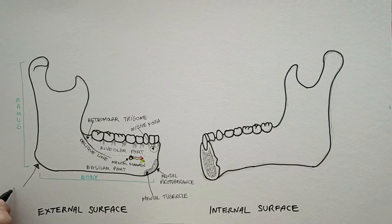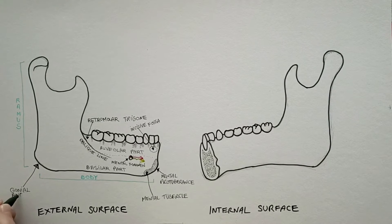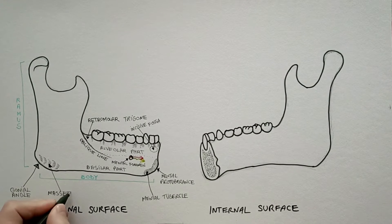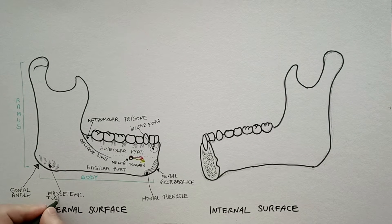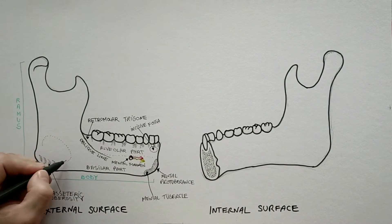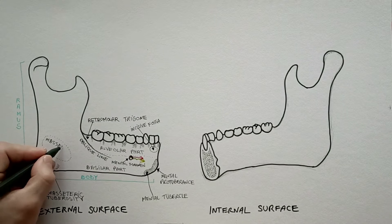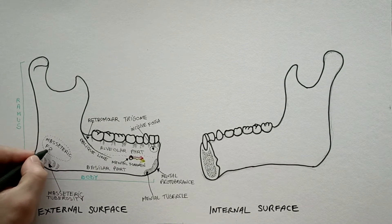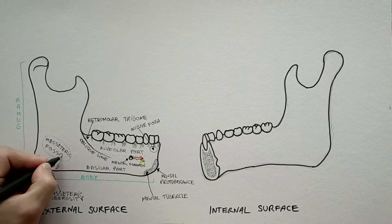The gonial angle is the rounded posterior inferior angle of the mandible. The masseteric tuberosity is a roughened area at the lateral edge of the gonial angle at which the masseter muscle attaches. The masseteric fossa is a shallow depression expressed variably just above the masseteric tuberosity.